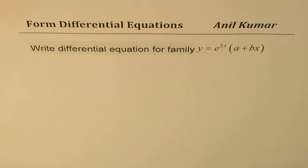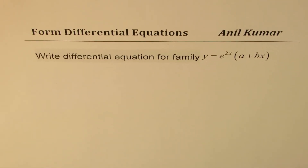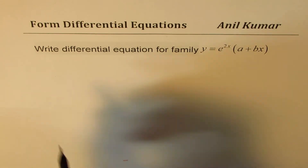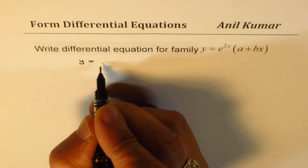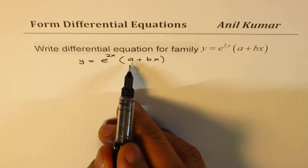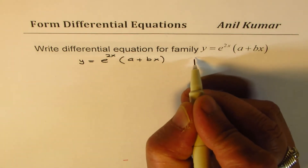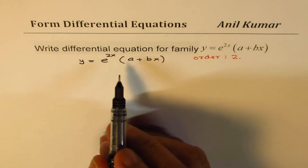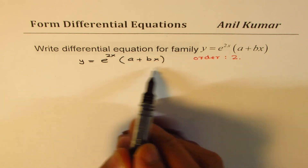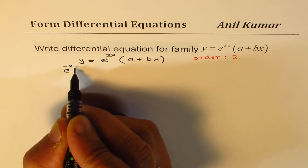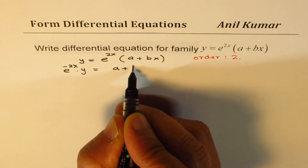Now the second example: y = e^(2x)(a + bx). This is similar to the previous one — I'd like you to pause the video, solve it, and then check with my solution. Since there are two arbitrary constants, we are looking for order 2. Before taking derivatives, let's isolate the variables by dividing both sides by e^(2x), giving e^(-2x)·y = a + bx.